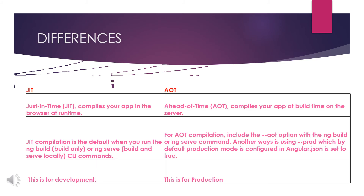Here I have given three main differences. As I already mentioned, JIT is for development and AOT is for production. Regarding how compilation works: JIT compiles the application in the browser at runtime, but AOT compiles first, making it easier to run the application on the server. That is the main difference between these two, and other smaller differences are listed here as well — just go through them.